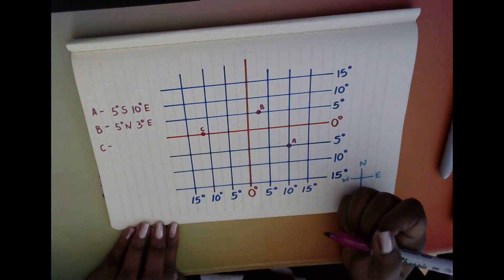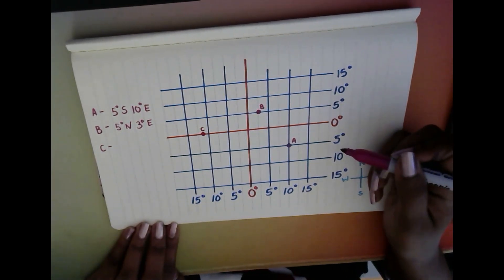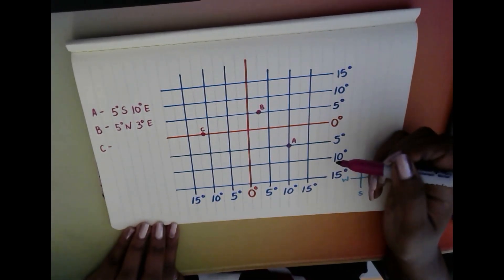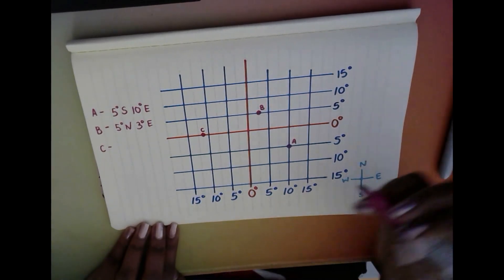Well, the answer is it's not. C is sitting on the equator—it's not in the north and it's not in the south. So we can't give it a direction at all. So all we're going to do is write down zero degrees. We can't say whether it's north or south because it's not in either—it's just in the middle.